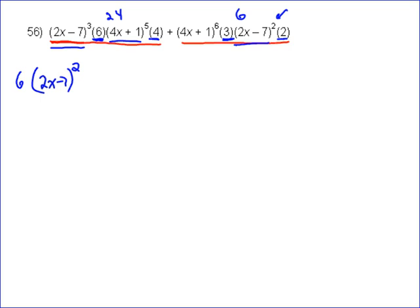And then you look at the 4x plus 1 to the fifth. Well, I've got two of those, and the smallest power of those I have is the fifth power. So I'm going to pull out 4x plus 1 to the fifth.